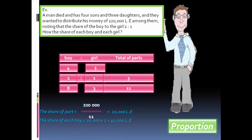The share of each boy equals 20,000 times 2, equals 40,000. The share of each girl: 20,000 times 1, equals 20,000.